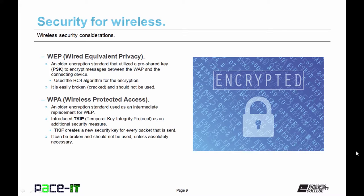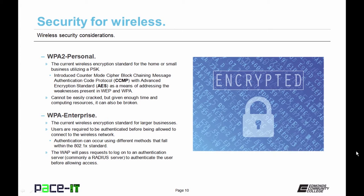Better than WEP is WPA, Wireless Protected Access. It is also an older encryption standard, used as an intermediate replacement for WEP until a better standard could be brought online. WPA introduced TKIP — Temporal Key Integrity Protocol — as an additional security measure. TKIP creates a new security key for every packet sent across the wireless network. WPA can be broken and should not be used unless absolutely necessary.